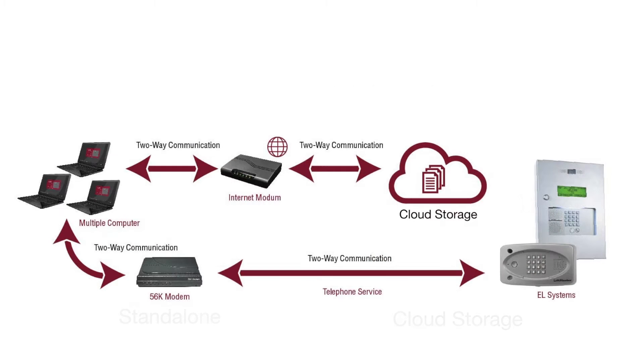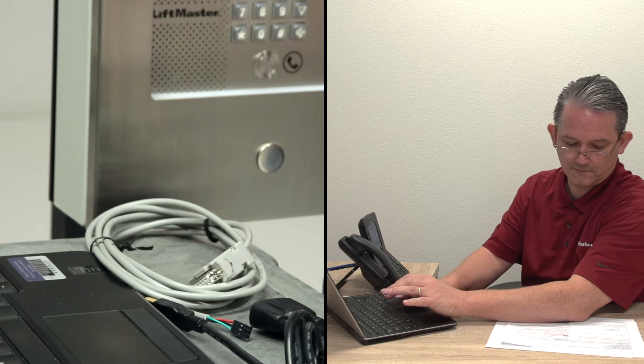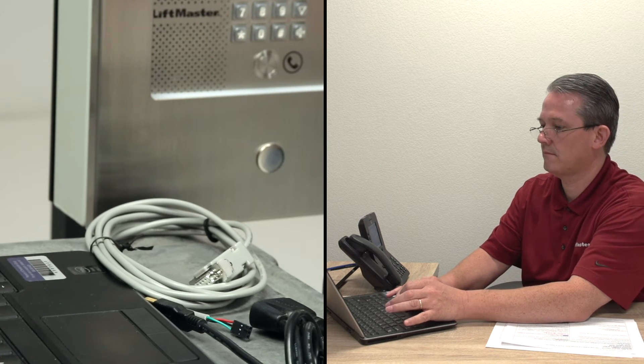The telephone entry system is then programmed with the data, either from the cloud or from the locally stored database, allowing it to do the job of controlling access to the property. When administrators make updates to the database, such as adding residents or creating properties, those updates need to be programmed into the telephone entry system. There are several ways to connect and transfer data to the EL2000SS and the EL25.